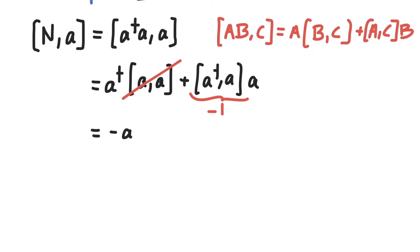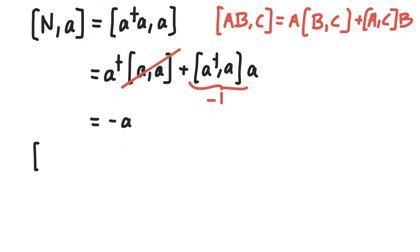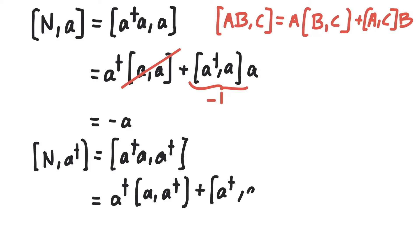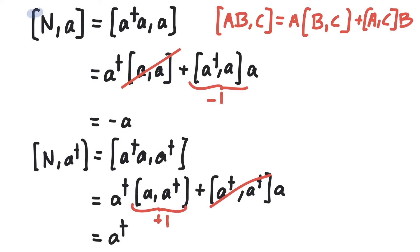Next, let's talk about the commutator of N with a dagger. This is given by N a dagger equals a dagger a with a dagger. We can make use of the same identity as before and write this as a dagger times the commutator of a with a dagger, plus the commutator of a dagger with a dagger times a. The first commutator vanishes and the second gives plus one, so the result is plus a dagger.